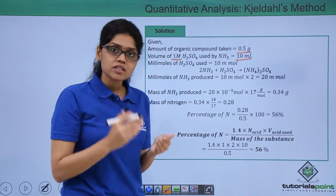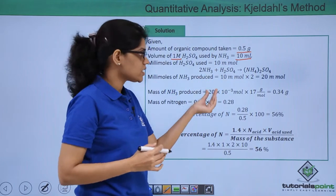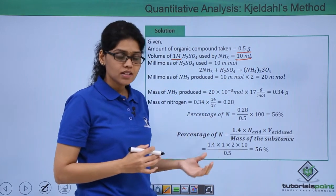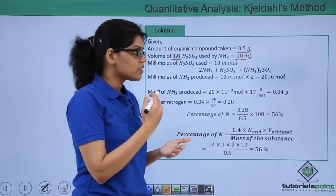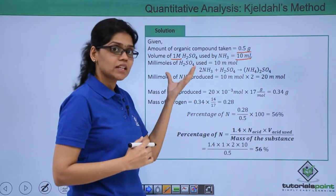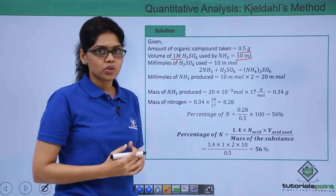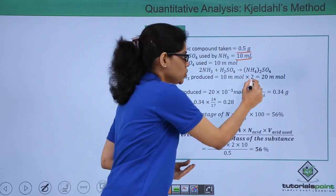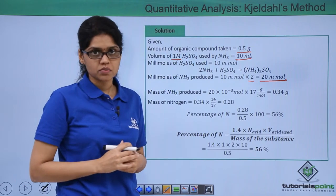The reaction of sulfuric acid with ammonia is: 2 NH₃ + H₂SO₄ → (NH₄)₂SO₄. The mole ratio of ammonia to H₂SO₄ is 2:1. Based on that, the millimoles of ammonia produced would be 10 millimoles of H₂SO₄ multiplied by 2, which gives us 20 millimoles of ammonia produced.